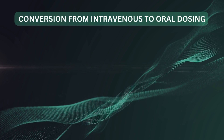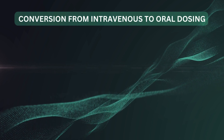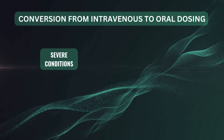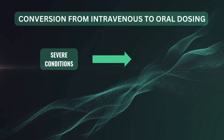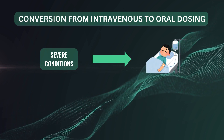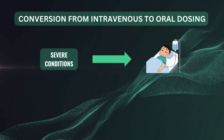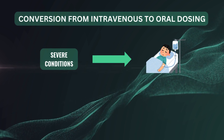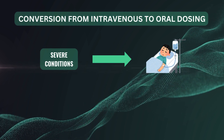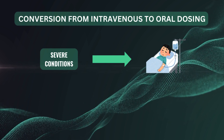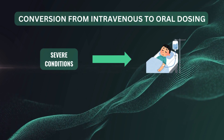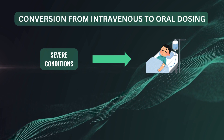When a patient is admitted to the hospital with conditions like acute pancreatitis, dengue, or typhoid, they're often initially treated with IV infusions. Because in severe conditions, IV infusions ensure that the drug reaches the systemic circulation quickly and with 100% bioavailability, meaning there's no loss of the drug during absorption.